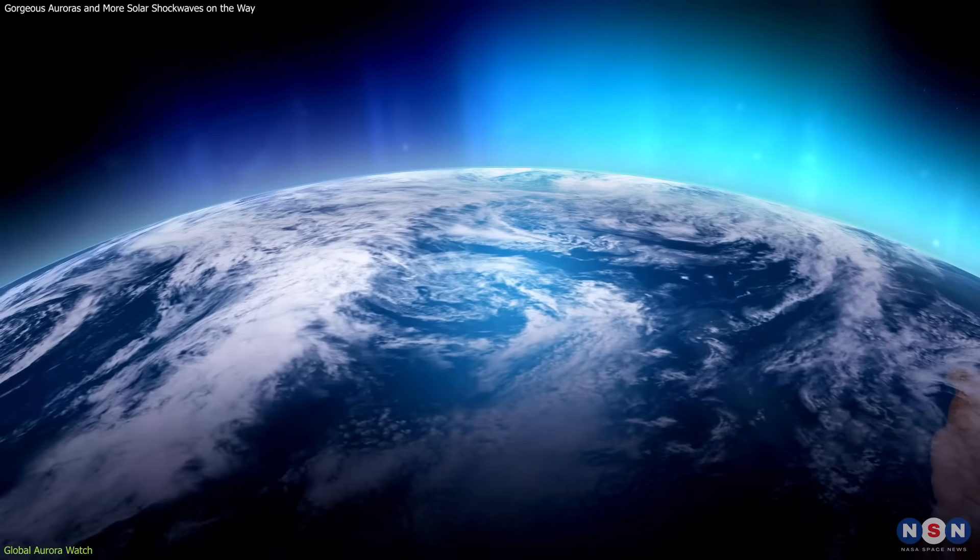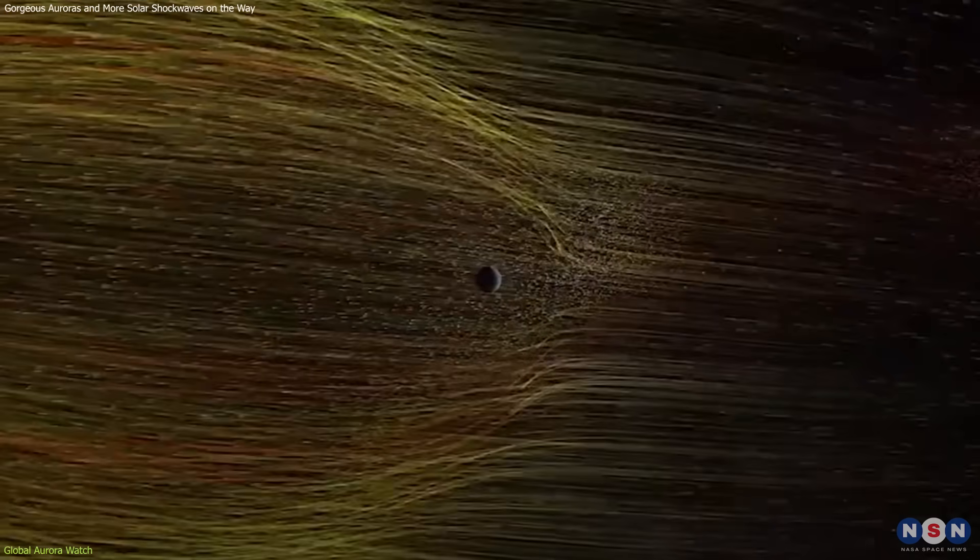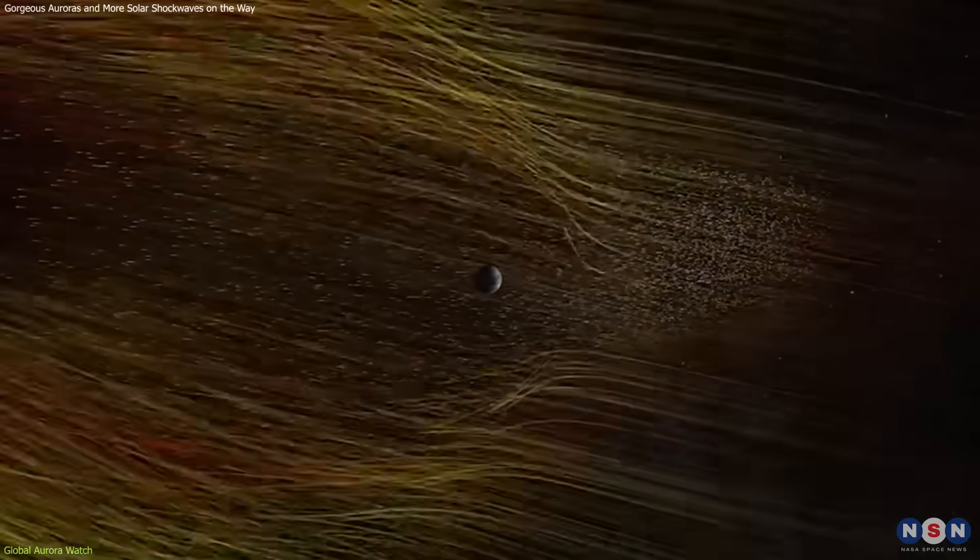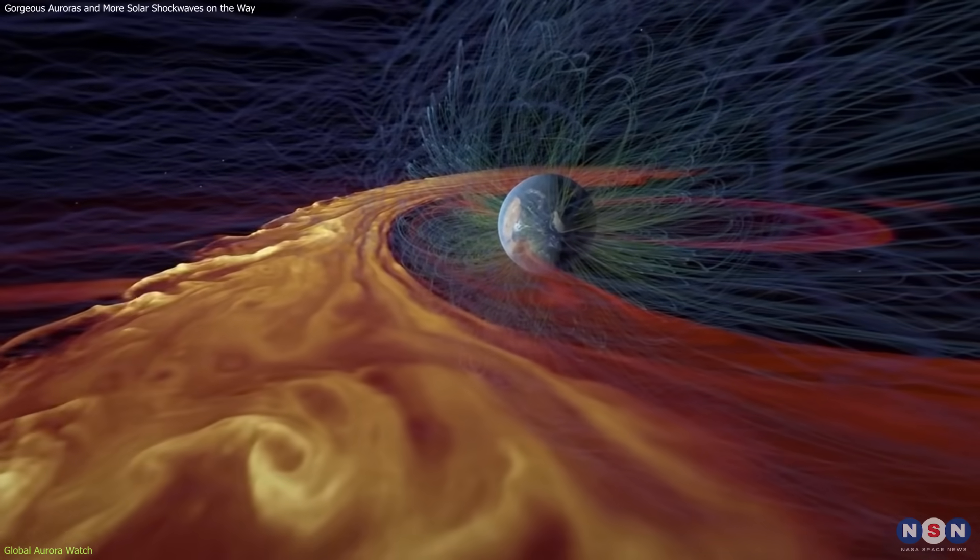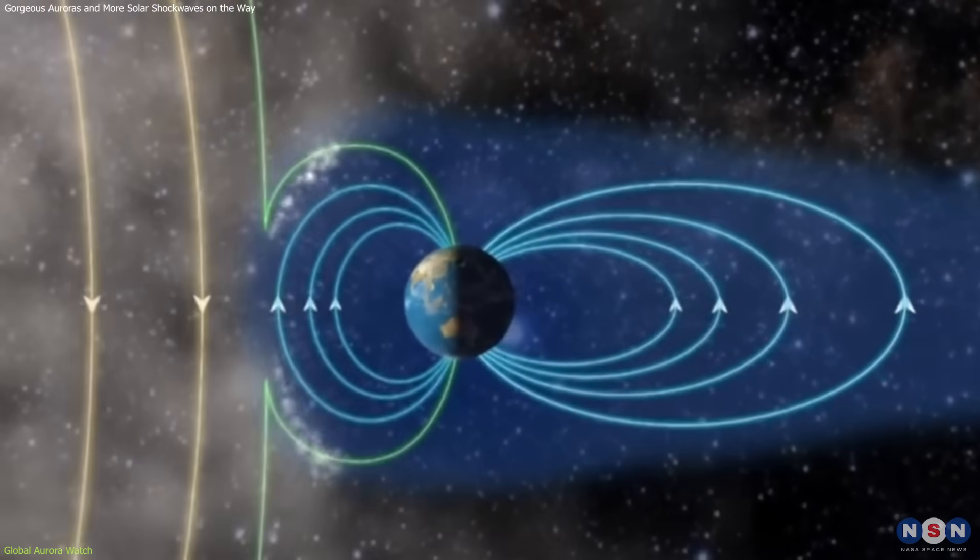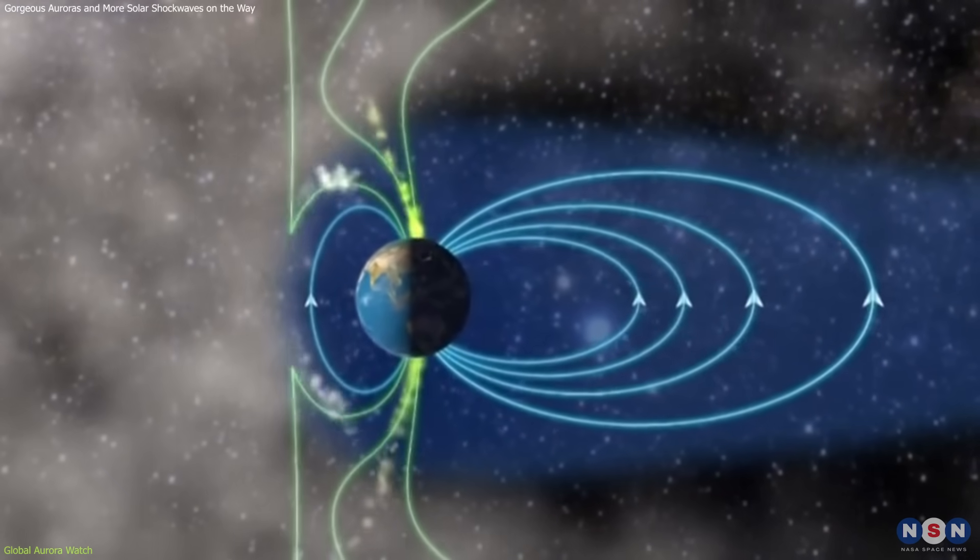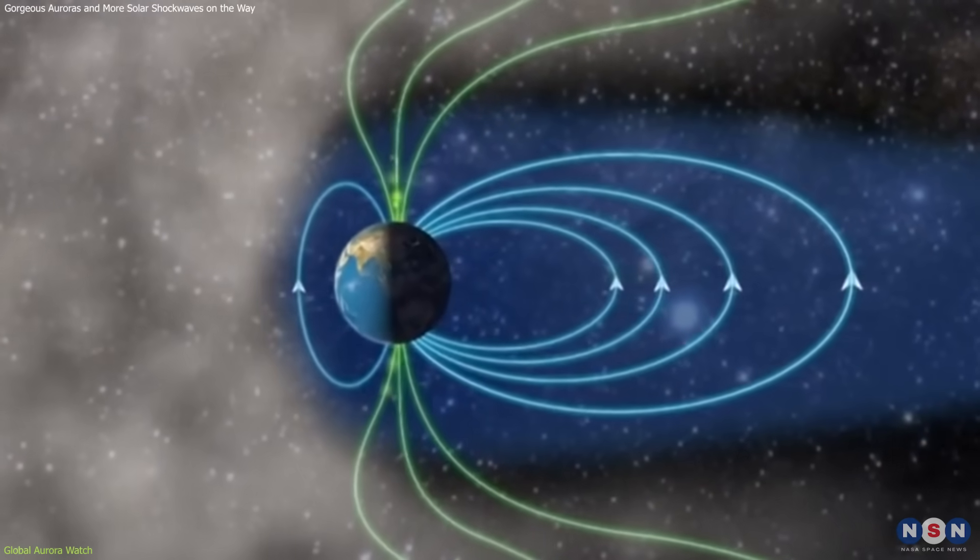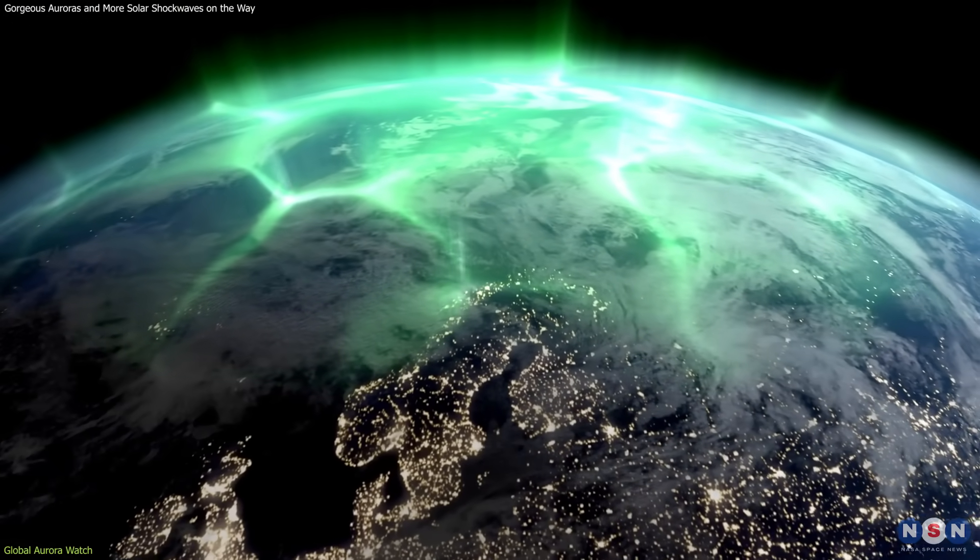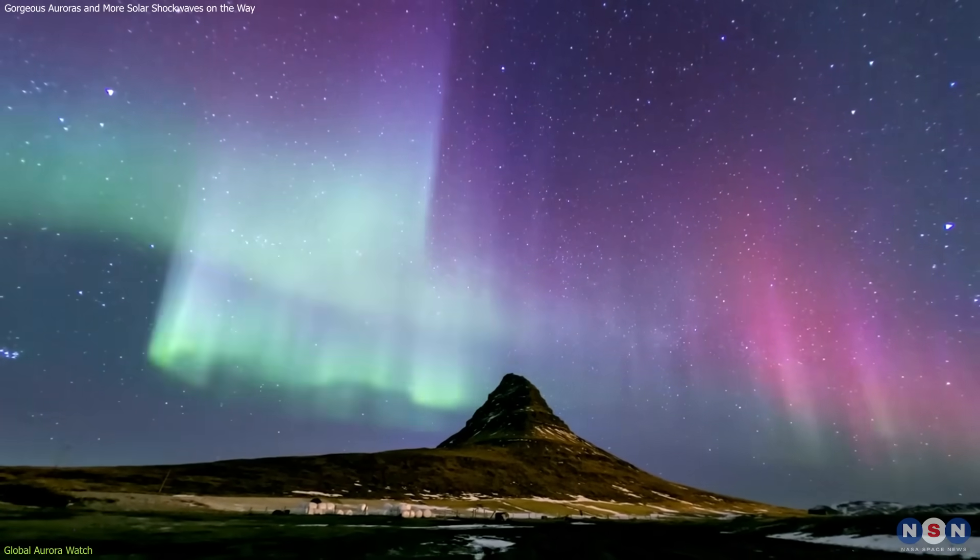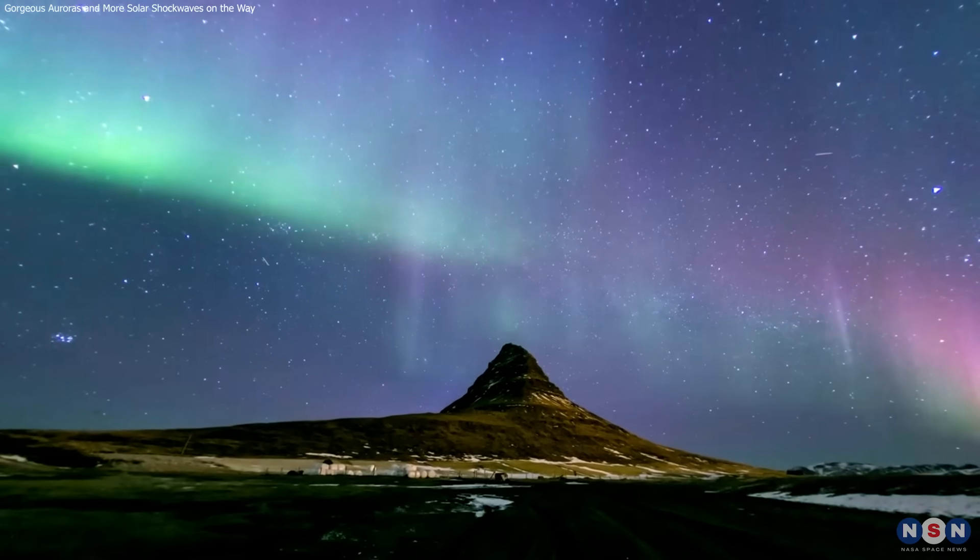These auroras are produced when the solar wind, a stream of charged particles flowing out from the sun, interacts with the Earth's magnetic field. This interaction causes complex changes in the magnetic envelope that protects our planet. Under certain conditions, these particles travel along the magnetic field lines to the polar regions, where they collide with gas atoms in the Earth's atmosphere, releasing energy in the form of colorful lights. But why are these auroras becoming more visible and vibrant across different parts of the world?